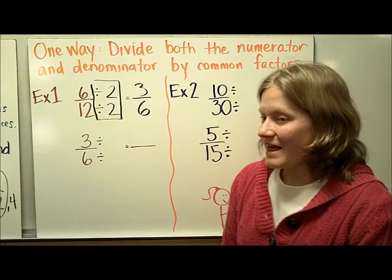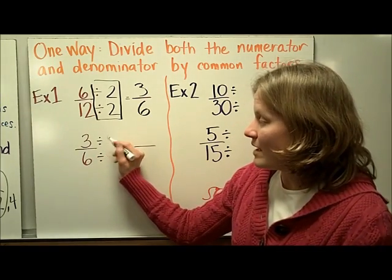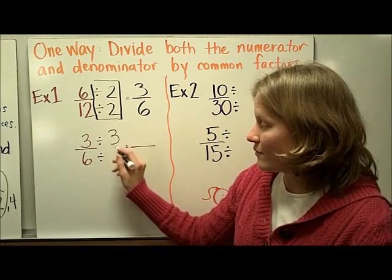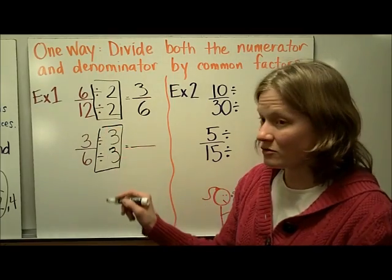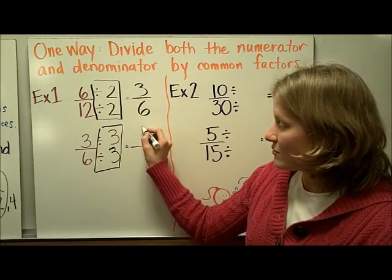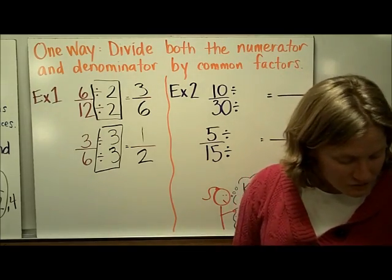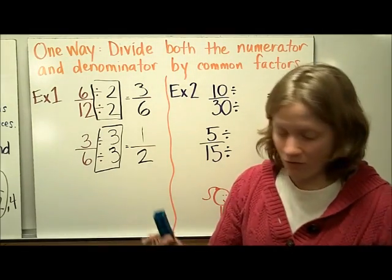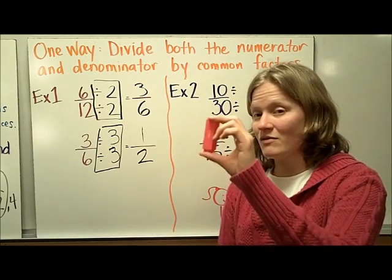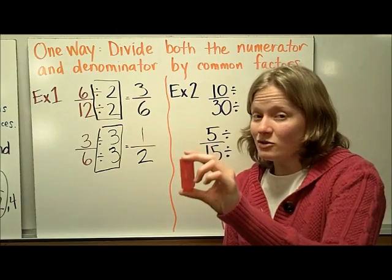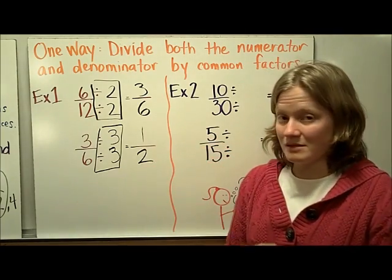So now I've got 3 sixths. And I think about it — they still have another common factor. Both of them have 3 as a factor; both are divisible by 3. So I'm going to divide by the one whole fraction 3 thirds. 3 divided by 3 is 1, and 6 divided by 3 is 2. In fraction tower form I've gone from 3 sixths to 1 half, and they are equivalent fractions. Since 1 and 2 have only 1 as their common factor, I know this is in simplest form.